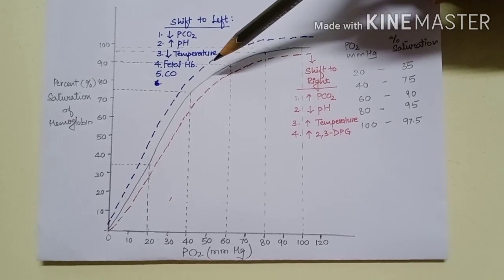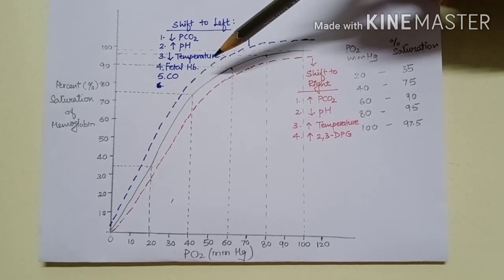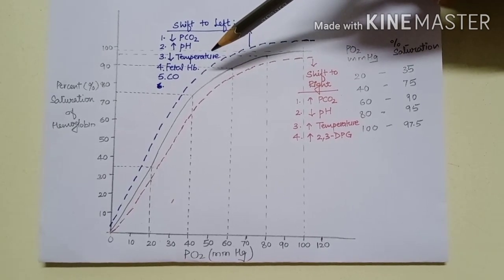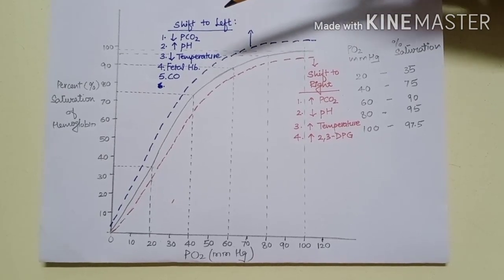Carbon monoxide also shifts the curve to left due to inhibition of 2,3-DPG synthesis. For myoglobin also, the curve is shifted to left.